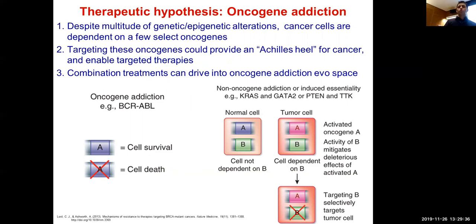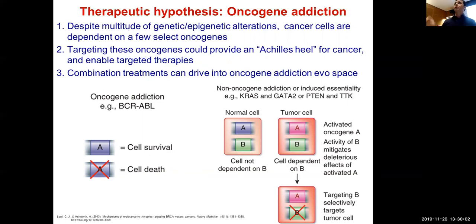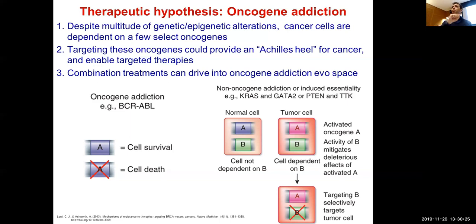Combination treatment can also create these addictions even if the tumor isn't initially dependent. You could target it with another treatment that pushes it into a narrow evolutionary space, making it addicted to a specific capability. The less fit lineages then die off, and you can target that remaining lineage. Most of the time you're targeting the wild-type version, but there are ways to go after specific capabilities in their mutated state.